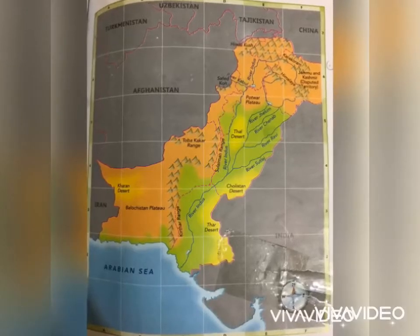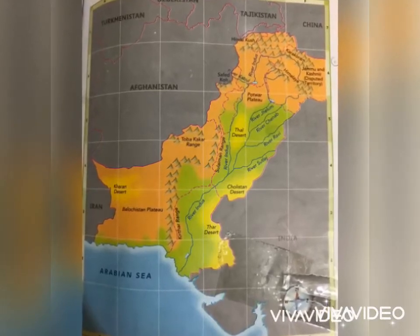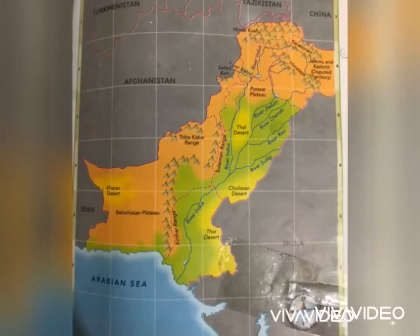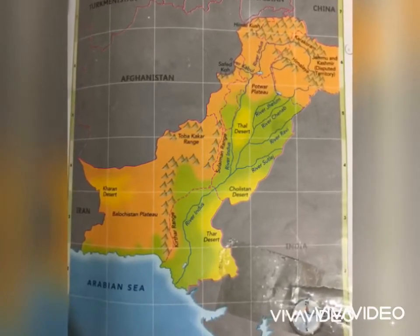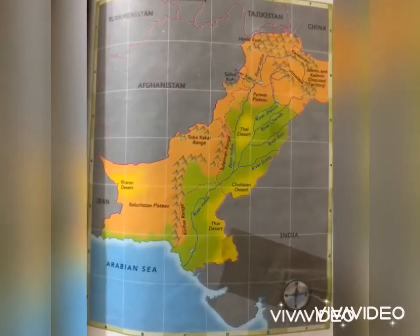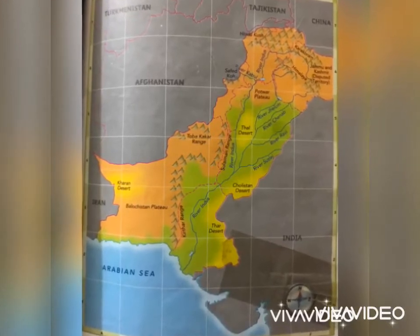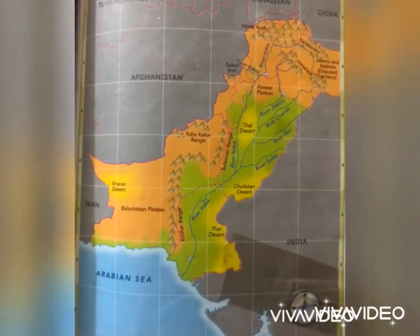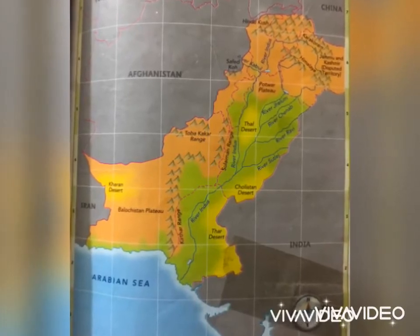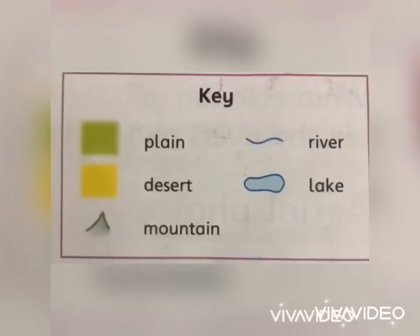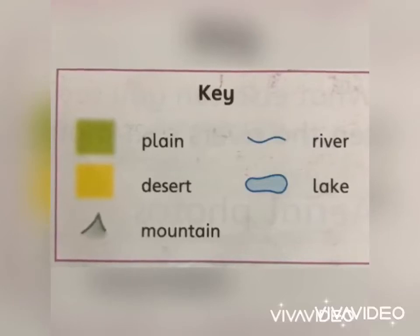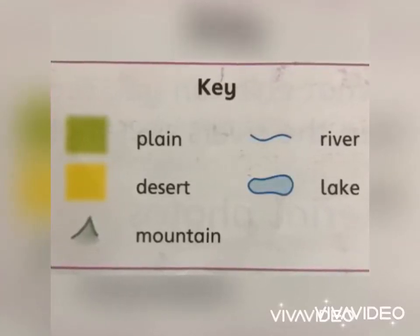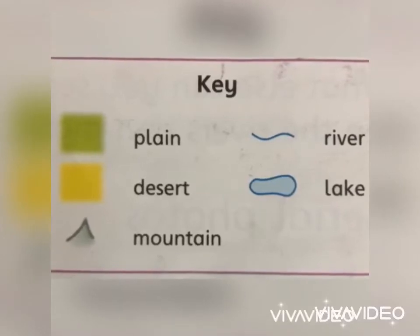Now let's talk about different types of maps. First, physical maps. You will see on page number 33. Physical maps show you the landforms of that area. In physical maps you will find mountains, deserts and rivers. If you find these things, this is called a physical map.